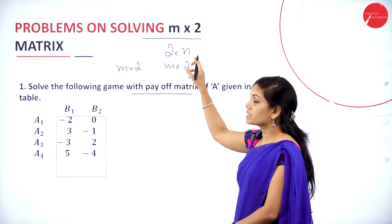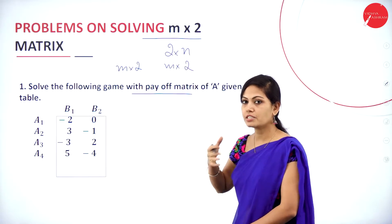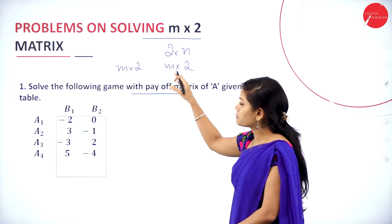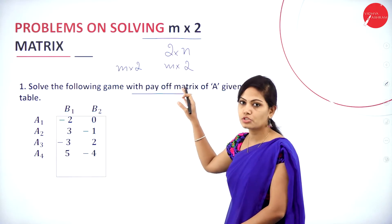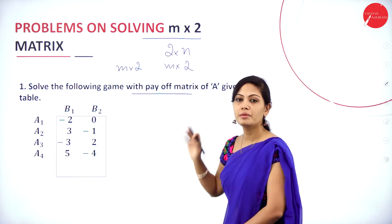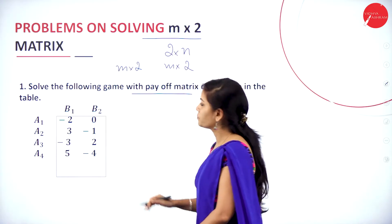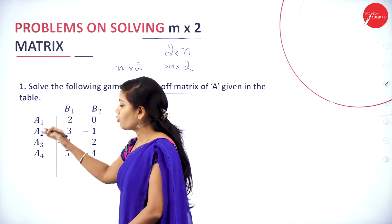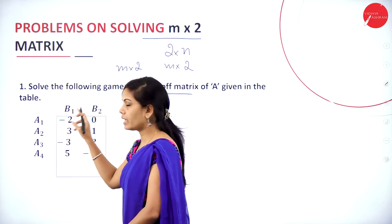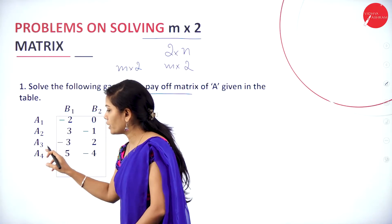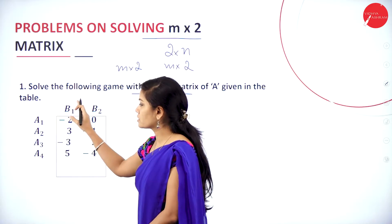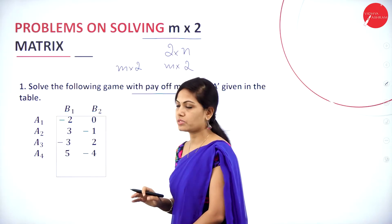In the graphical method you have two types: 2×n games and m×2 games. I have already discussed how to solve the 2×n method. Now I am explaining the m×2 matrix. Here we have 4 rows and 2 columns: B1 and B2 are the columns, and A1, A2, A3, A4 are the rows. This is called an m×2 matrix game.